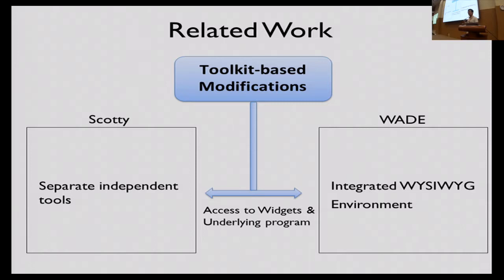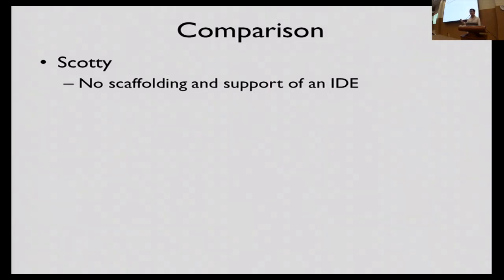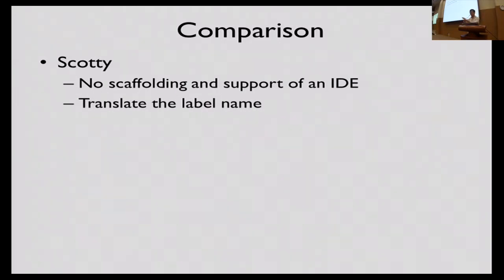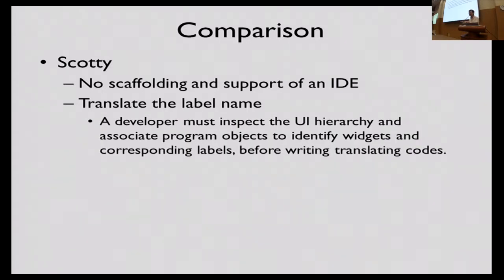This is where WAIT comes in. WAIT adds a GUI interface to allow you to make those changes without the tedium of writing a lot of code. Comparing WAIT with SCOTI — SCOTI allows you to modify the underlying structure without really accessing the source code, but it doesn't have an IDE to support it. For example, if you want to translate a label from English to Russian, you have to dig through the code hierarchy, spend many hours finding where exactly the label is, and then make the change.